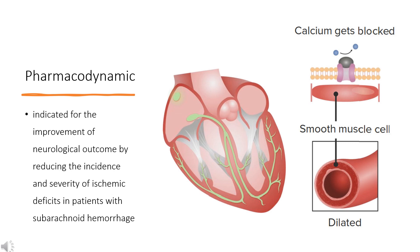Nimodipine belongs to the class of pharmacological agents known as calcium channel blockers. It is indicated for the improvement of neurological outcome by reducing the incidence and severity of ischemic deficits in patients with subarachnoid hemorrhage from ruptured congenital aneurysms. The contractile processes of smooth muscle cells are dependent upon calcium ions, which enter these cells during depolarization as slow ionic transmembrane currents. Nimodipine inhibits calcium ion transfer into these cells and inhibits contractions of vascular smooth muscle. In animal experiments, nimodipine had a greater effect on cerebral arteries than on arteries elsewhere in the body, perhaps because it is highly lipophilic, allowing it to cross the blood-brain barrier.